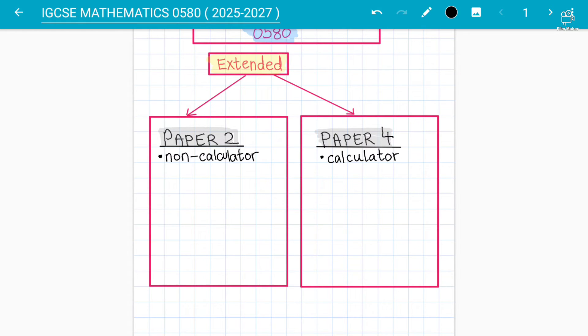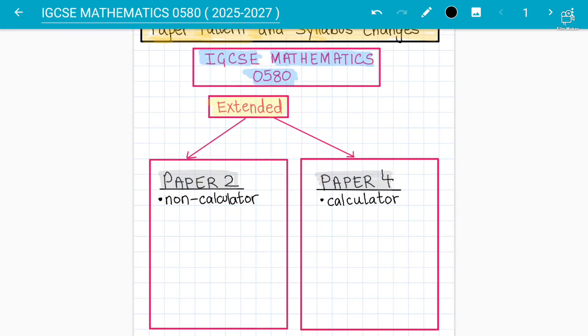Basically they are trying to become like the GCSE O-level maths 4024, so almost the syllabus will be 95 percent same for both of them. O-level maths 4024 will be the same and IGCSE maths 0580 will be the same. One of the major points is that Paper 2 is now a non-calculator and Paper 4 is a calculator paper.